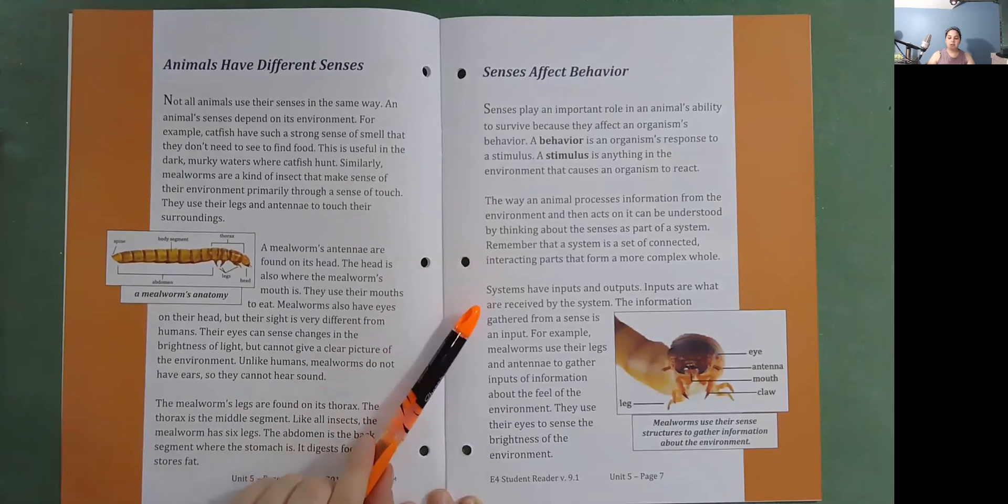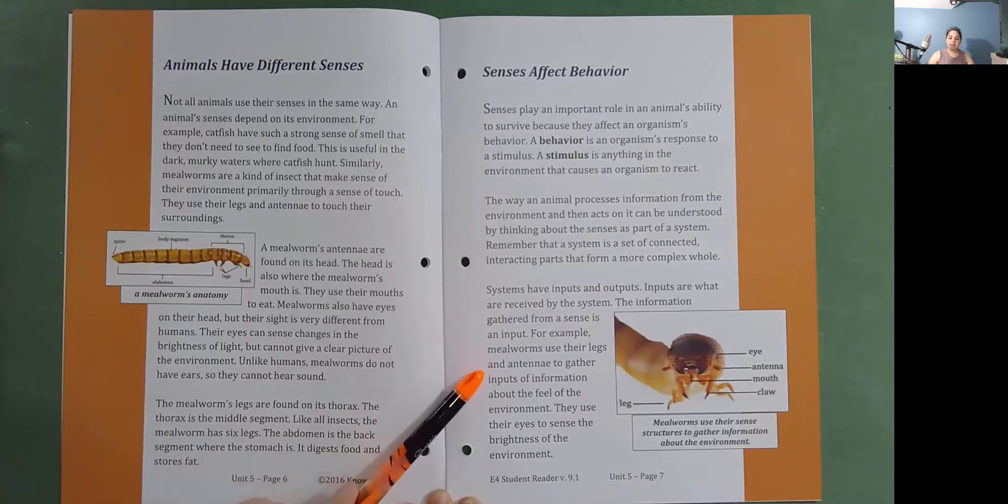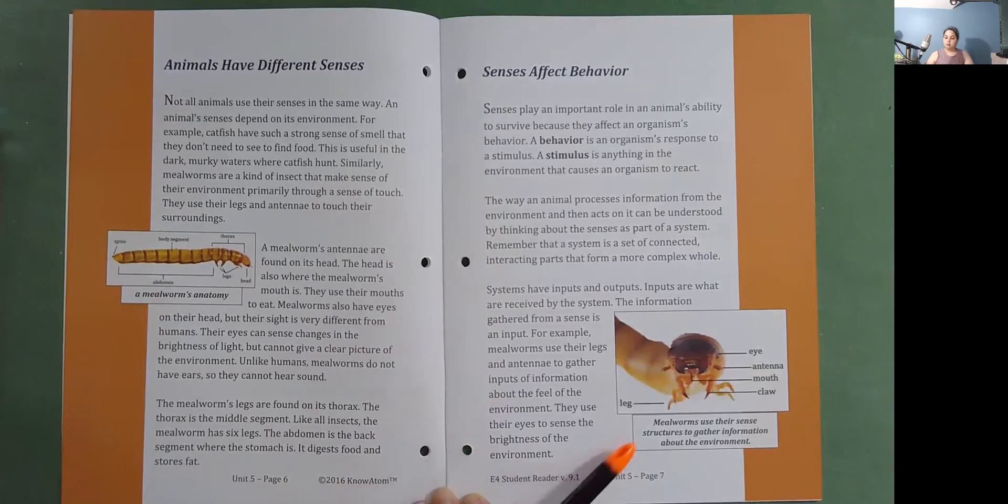Remember that a system is a set of connected, interacting parts that form a more complex whole. Systems have inputs and outputs. Inputs are what are received by the system. The information gathered from a sense is an input. For example, mealworms use their legs and antennae to gather inputs of information about the feel of the environment. They use their eyes to sense the brightness of the environment. Mealworms use their sense structures to gather information about the environment.